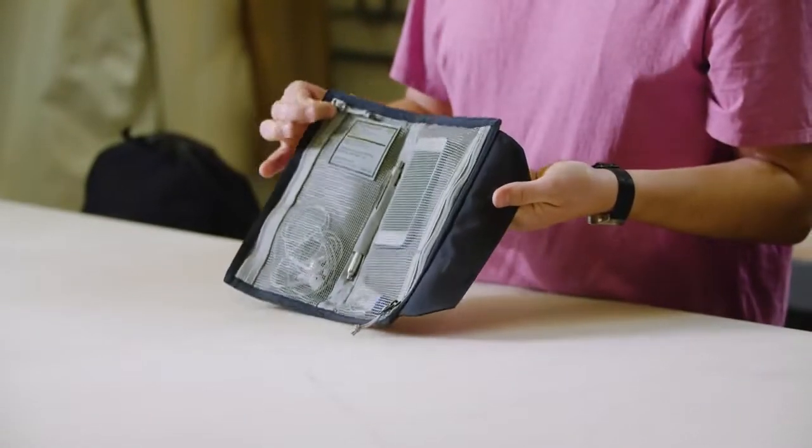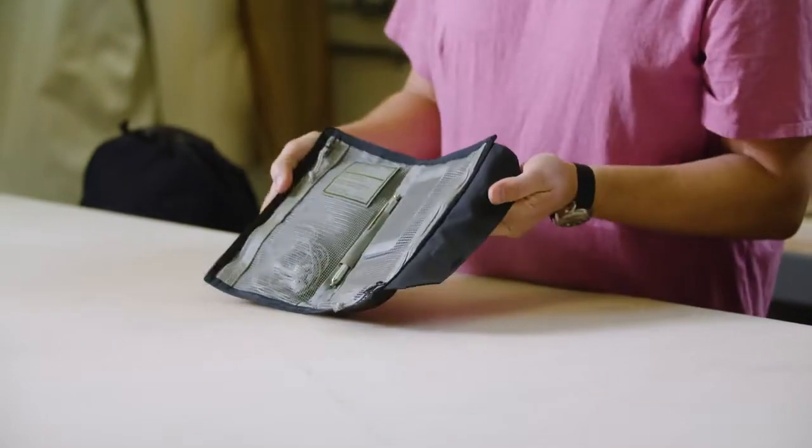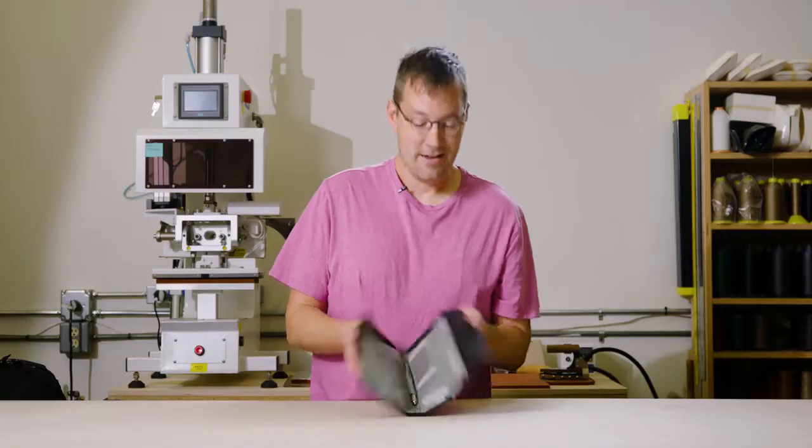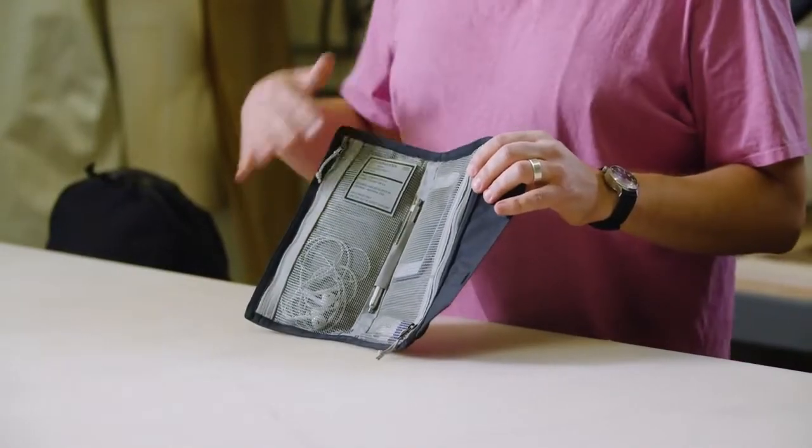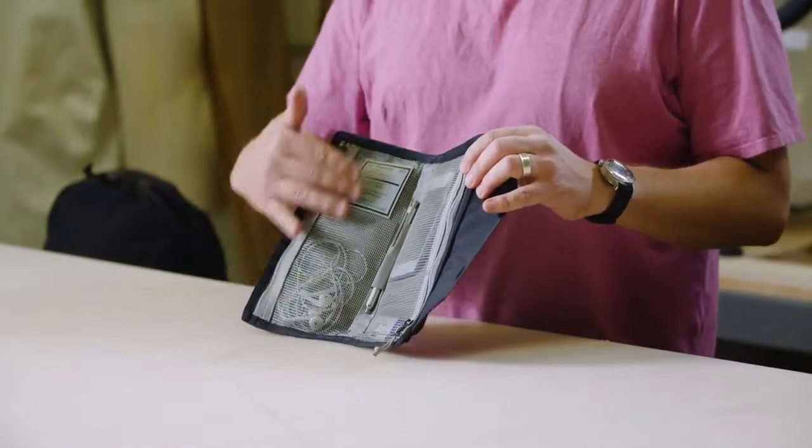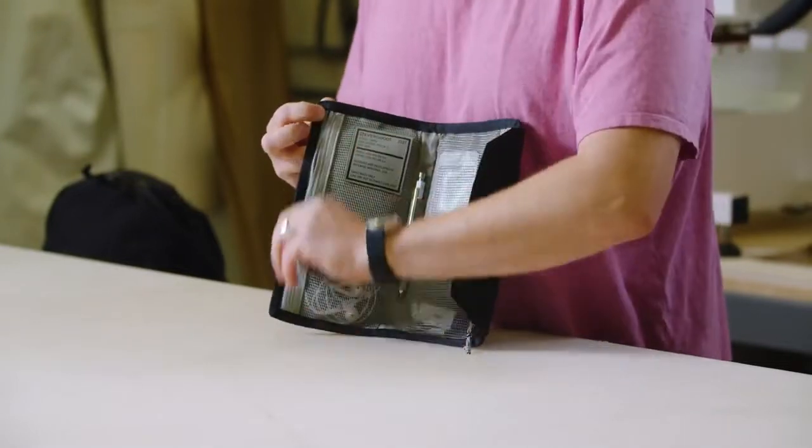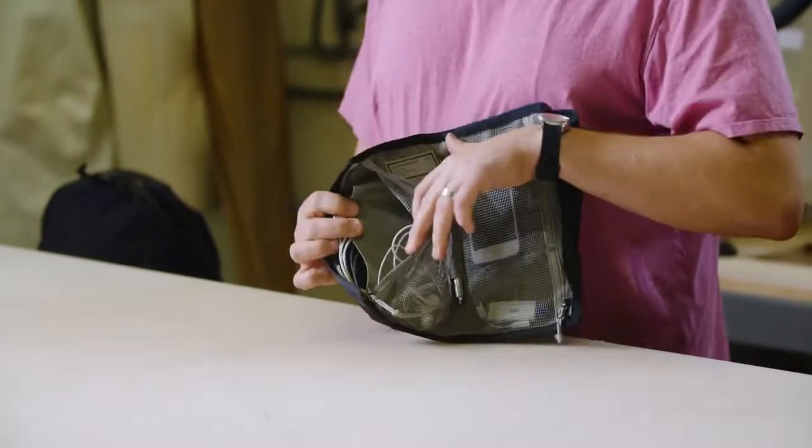The zipper heads land at opposite ends, so that when the pouch closes, they don't clack into each other or make contact. Each pocket has two layers. On the top is this mesh layer that you can see through. And then underneath that, there's actually a divider.